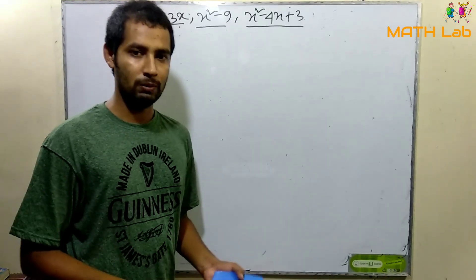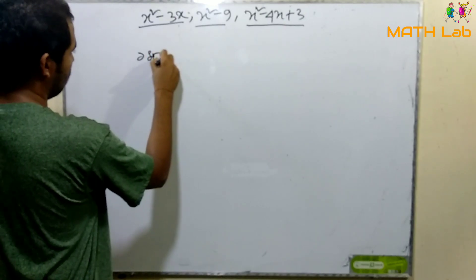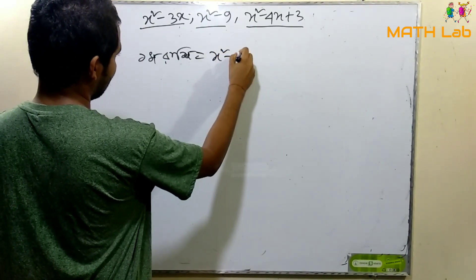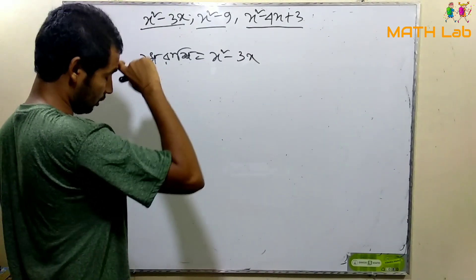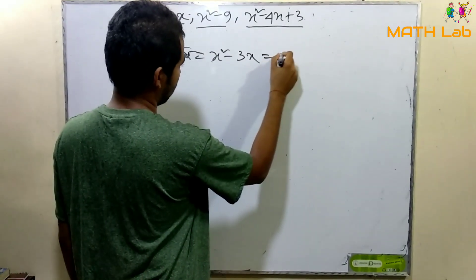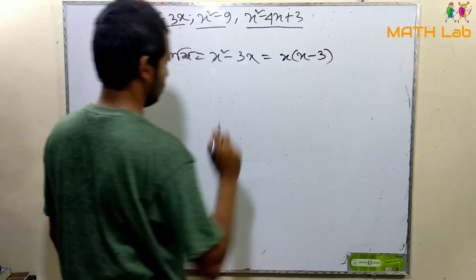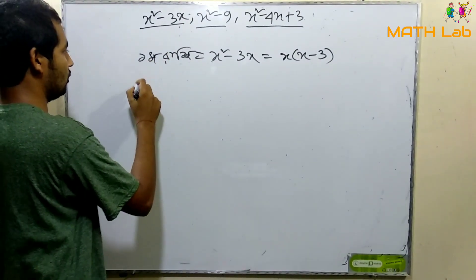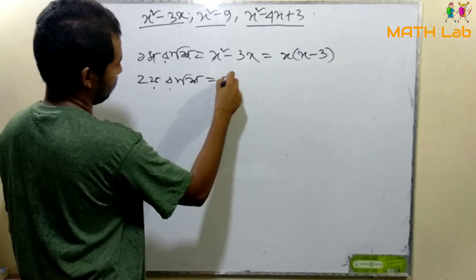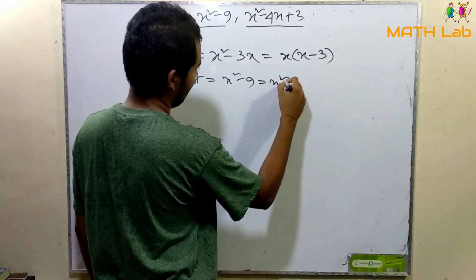I will show you the first one. The first one is x squared minus 3. The second one is x squared minus 3. x squared minus 9.